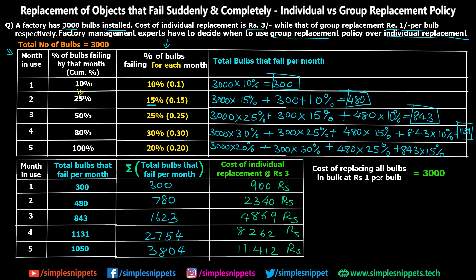The cost of replacing all 3000 bulbs in bulk at ₹1 per bulb is ₹3000. We now compare the individual replacement cost column against this ₹3000 bulk cost. At month 1 the individual cost is ₹900 — less than ₹3000, so bulk replacement is not needed. At month 2 it is ₹2340 — still less than ₹3000, so still okay. But by month 3, the individual replacement cost has risen to ₹4869, which is much higher than ₹3000. So the factory should perform bulk replacement after two months, since bulk replacement costs ₹3000 versus ₹4869 for individual replacement.